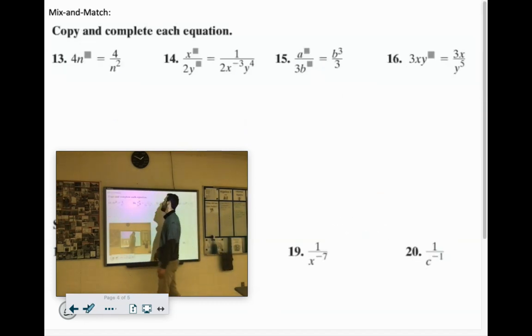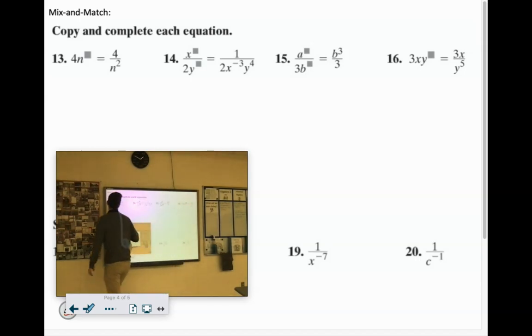Let's try mixing and matching. Copy and complete each equation. But look, somehow the N ended up in the denominator as positive 2, so what must it have been before it was moved there? Oh yes, a negative. Negative 2.